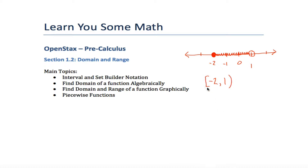We use brackets to indicate that you are including that endpoint in the set, and parentheses to indicate that you're not including that endpoint. So when you see this written, you're thinking all of the numbers in between negative two and one — like negative 1.9999, 0.54, 3/32nds, negative one, negative two, zero — but not including positive one, or anything bigger than one like 1.4, or anything less than negative two like negative 2.5 or negative seven.